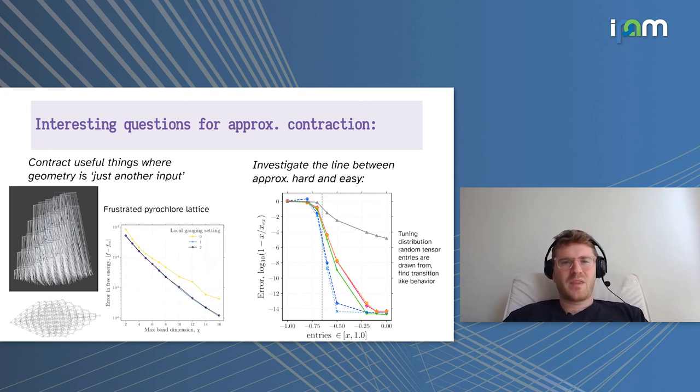Nonetheless, it does seem to work pretty well in certain cases. So interesting questions for extending this is what is the set of problems that can be approximately contracted and are useful to contract? Just as a proof of principle, here's a large critical and frustrated pyrochlore lattice. This has something like 800 spins. It's just at the very edge of what we can exactly contract and has an unusual geometry. We find in this case that taking some approximate contraction scheme, we get very nicely convergent results in the free energy, for example.